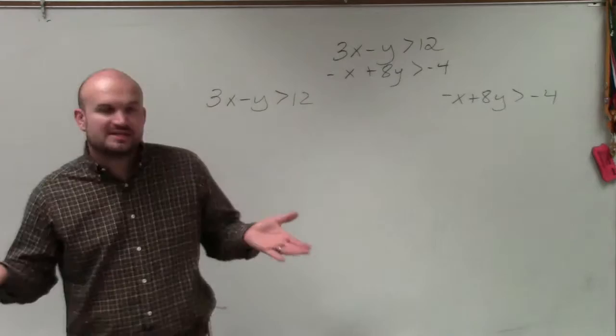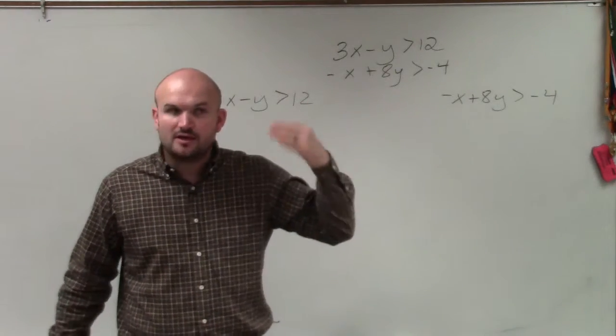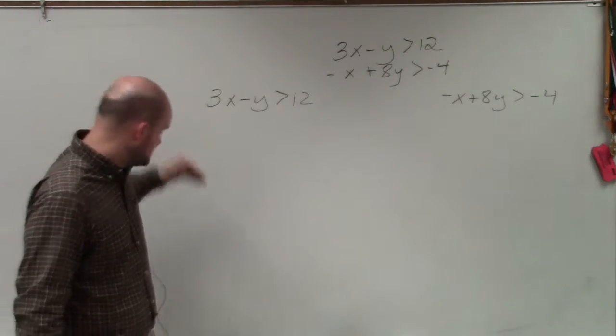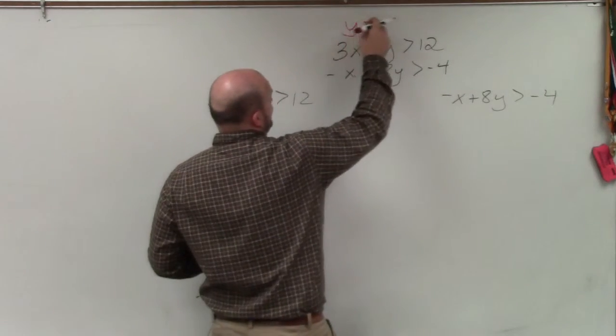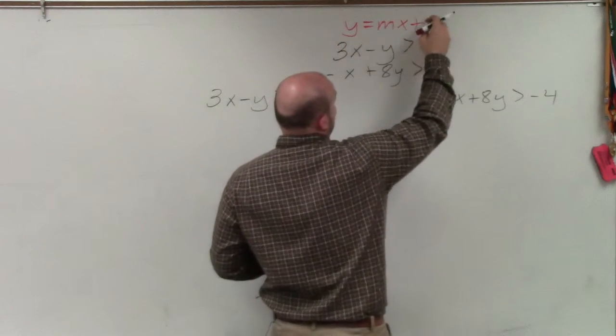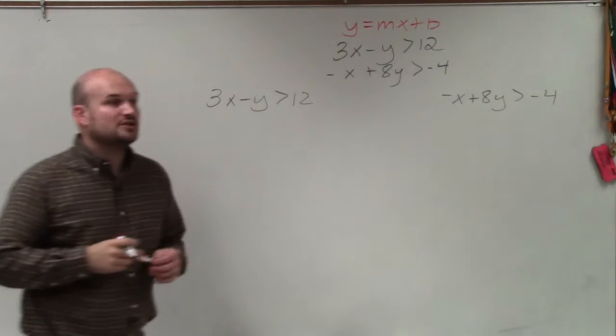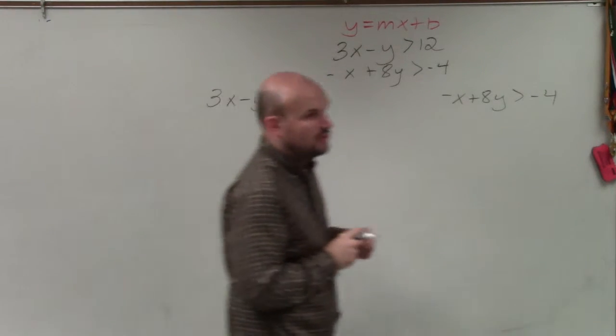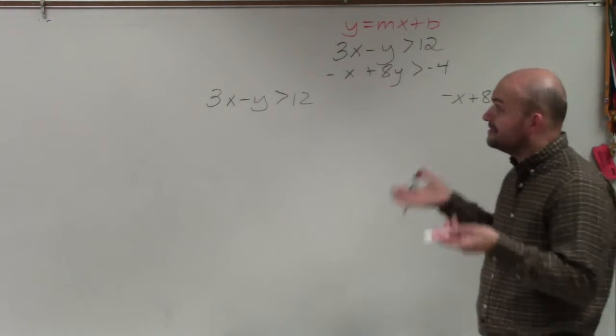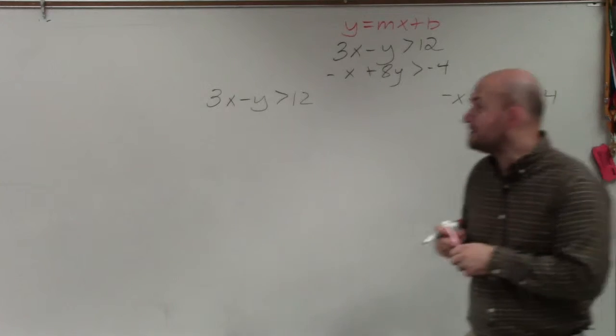So basically, my advice for you guys, my process, would be the first thing is to make sure you have them written in slope-intercept form. And if you guys remember slope-intercept form, y equals mx plus b. So basically, for each equation, we want to go ahead and solve for y. That means we need to isolate the y. That means we need to undo everything that's happening to the y.